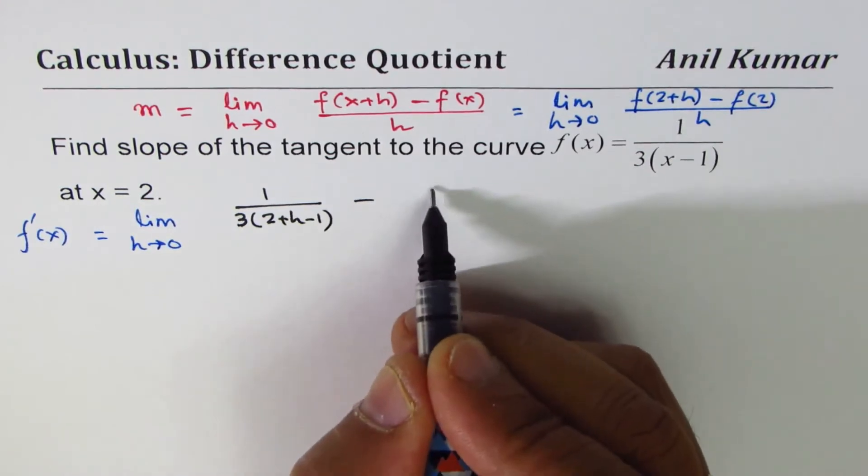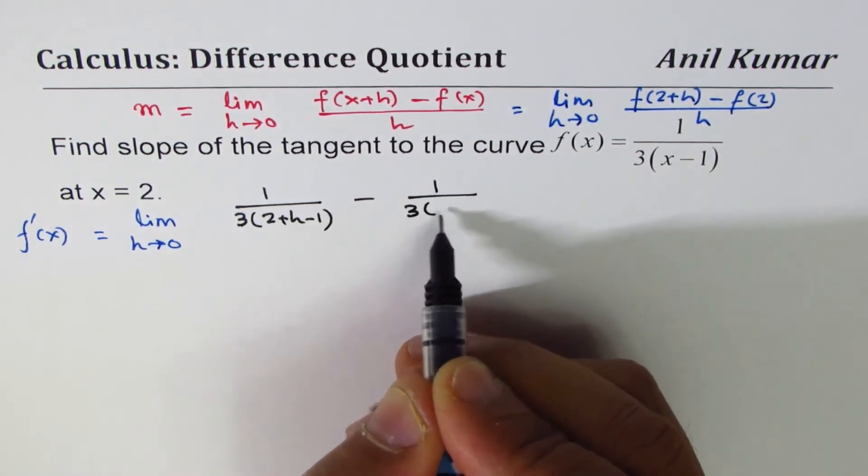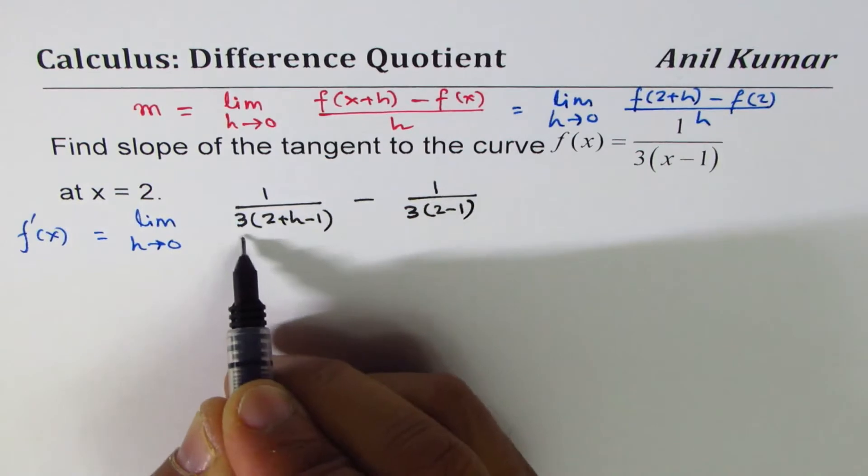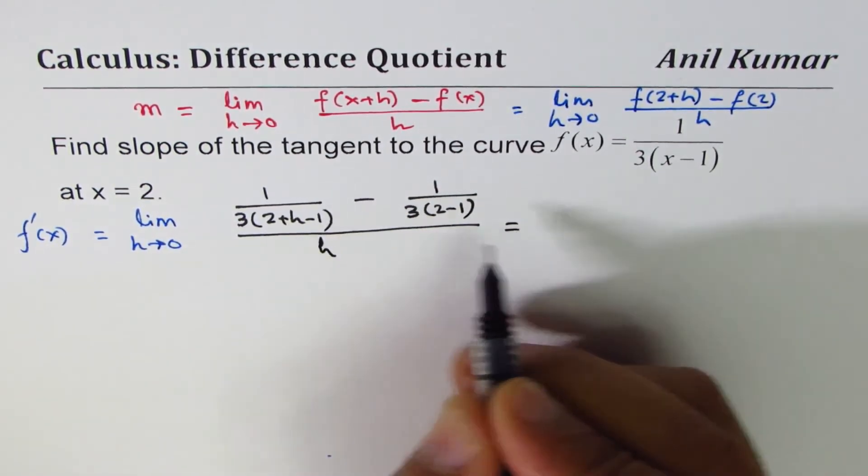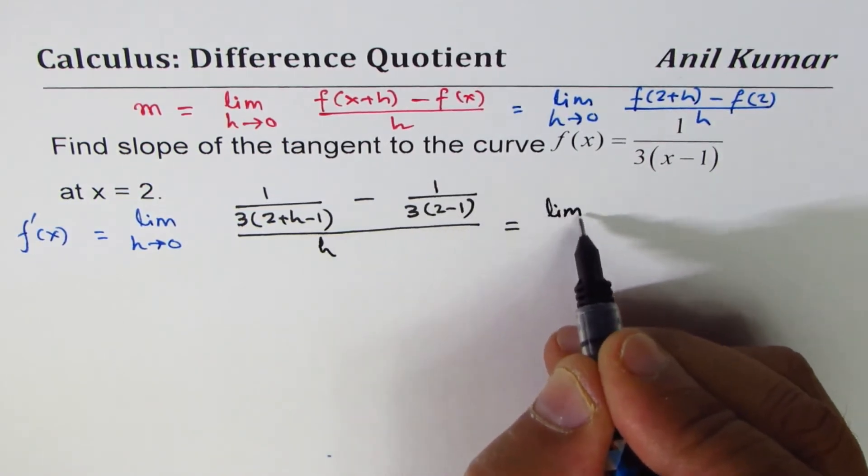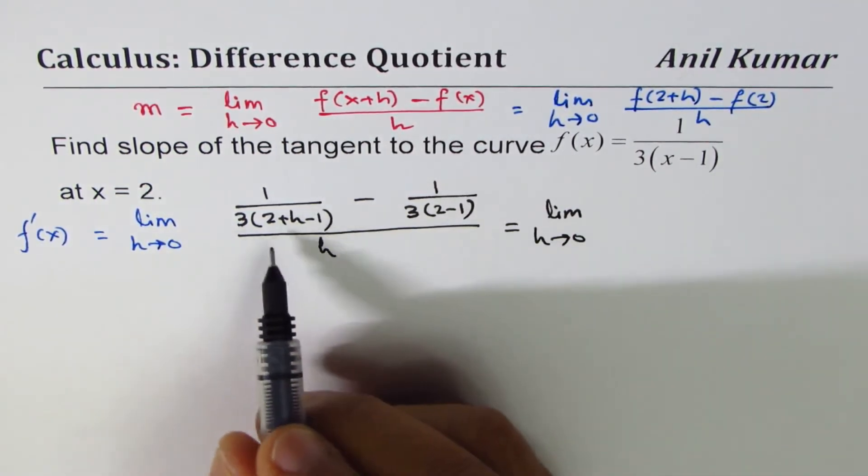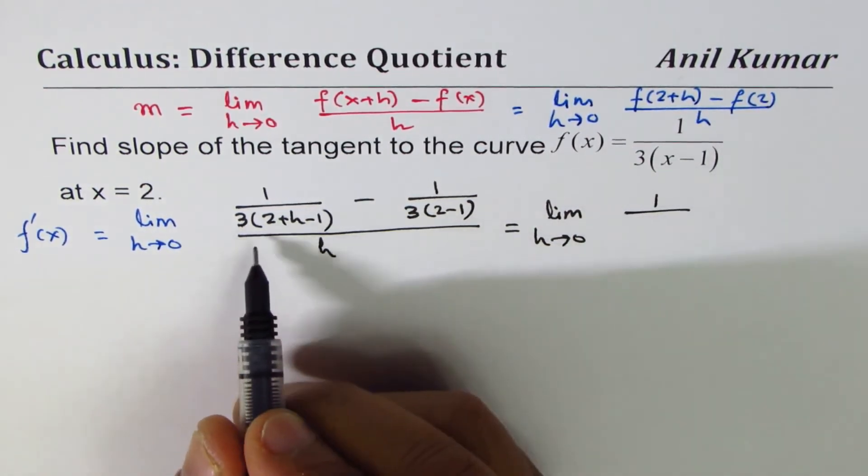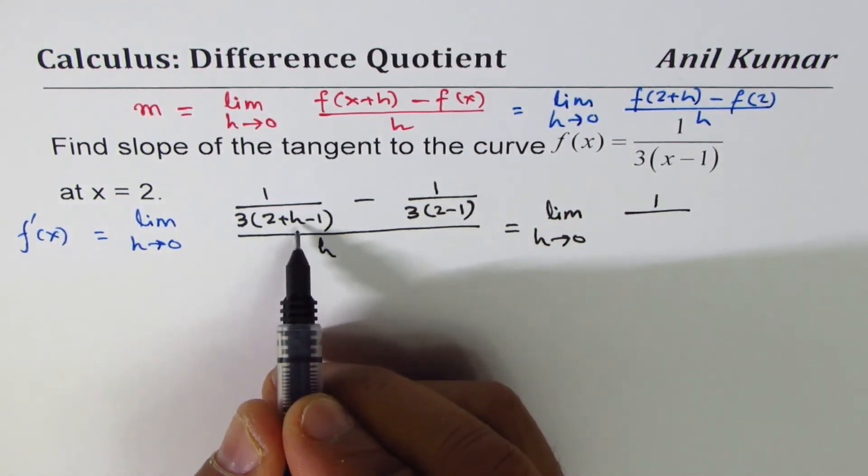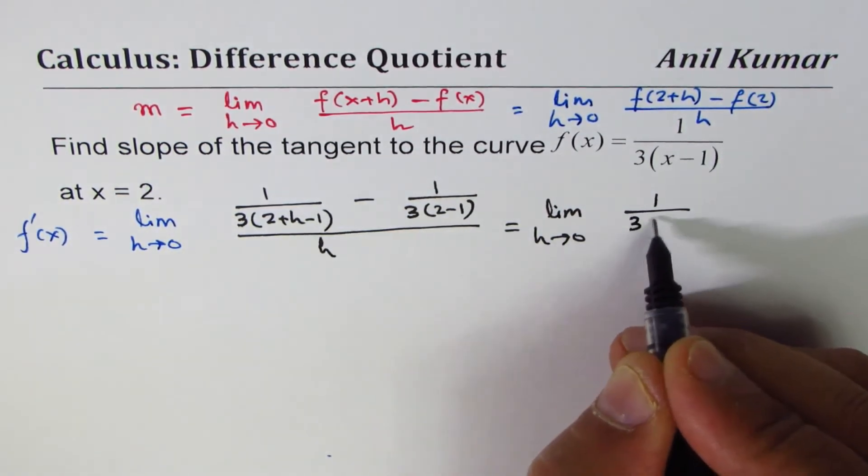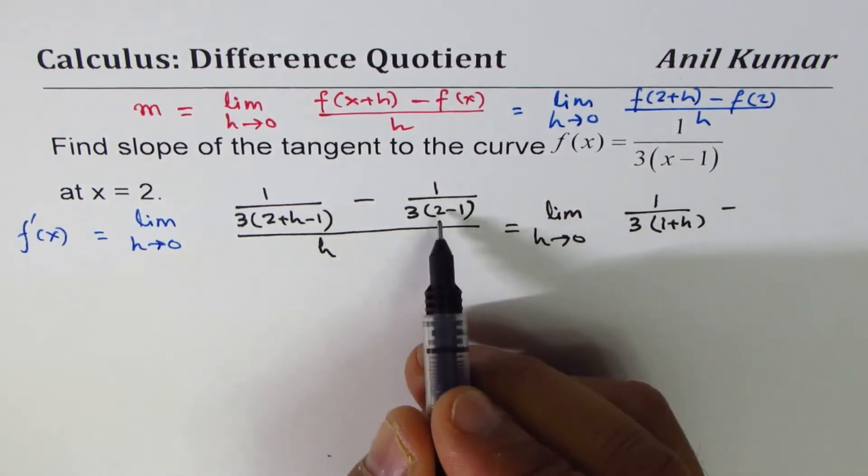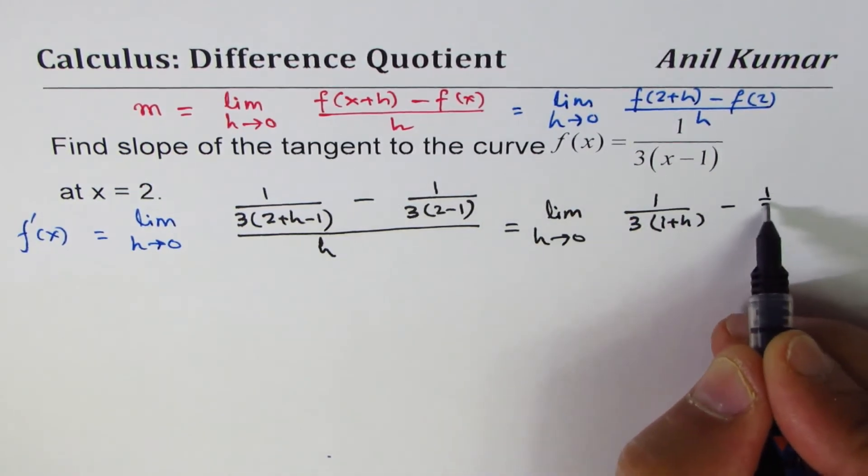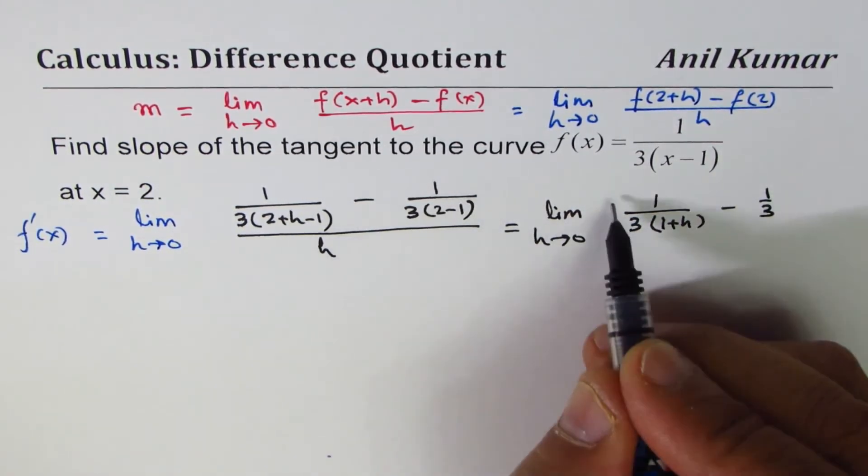Now let's simplify this. We can write this as limit h approaches 0: 1/(3(2-1)) is 1, so we can write 3 times (1+h). Minus 2-1 is 1, so 1/3 divided by h. I could write this also as 1 over h.